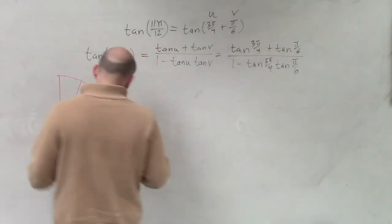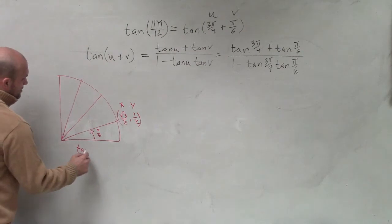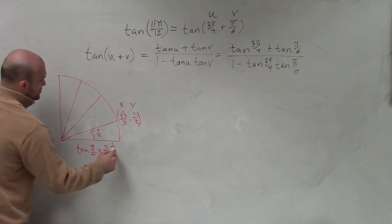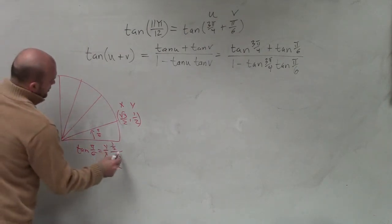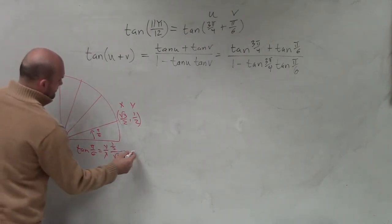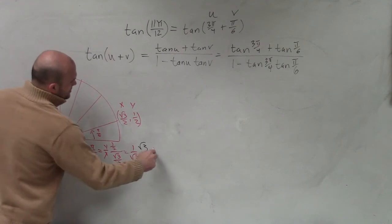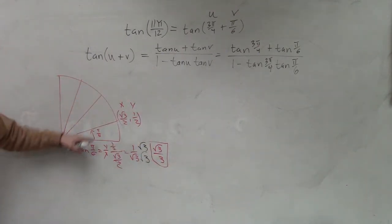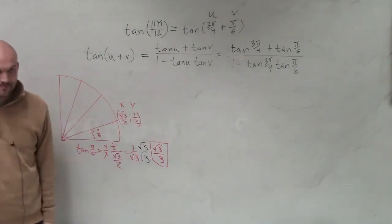Remember that's your x and your y. The tangent of π over 6 is equal to your y over your x, which is 1 half divided by square root of 3 over 2. The 2's divide to 1. This is not the first time we've gone over this. 1 over square root of 3, then you rationalize the denominator. Now you know that the tangent of π over 6 is always going to be the square root of 3 over 3.